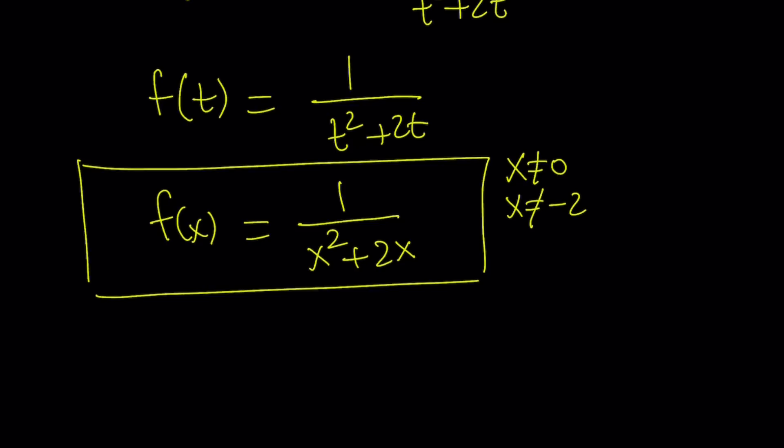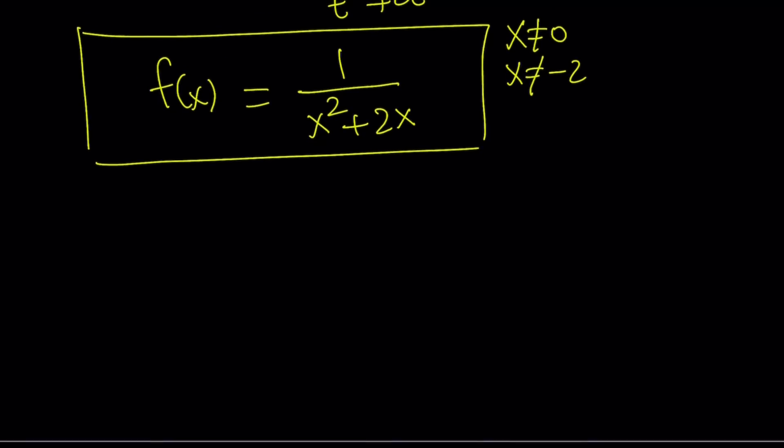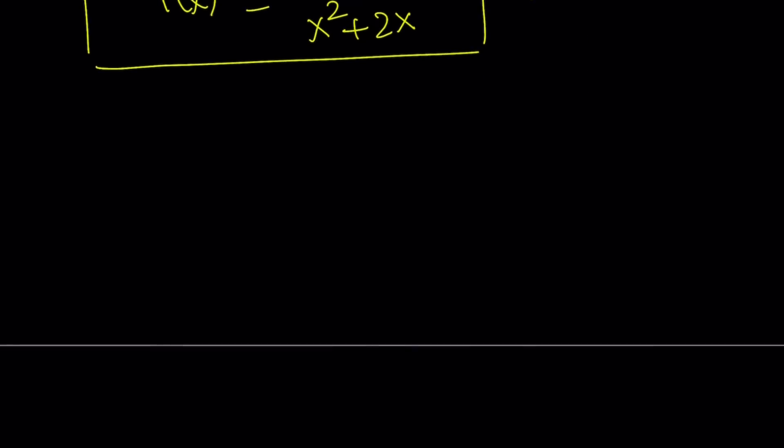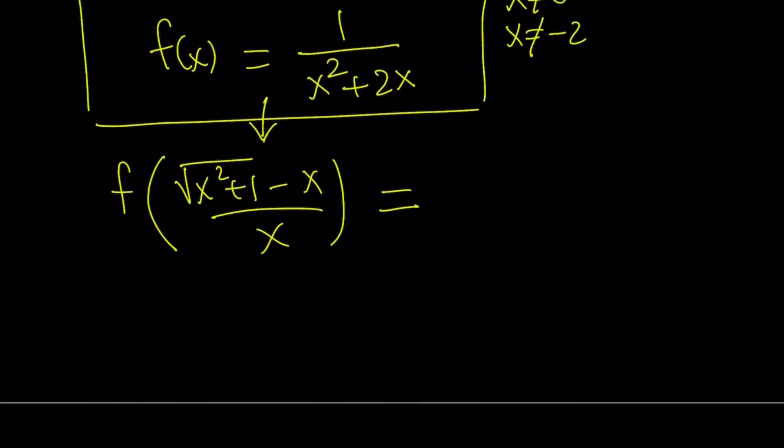Now we got this answer. What happens if you go back to the original expression and replace x with this expression? What is f of square root of x squared plus 1 minus x over x? So kind of working backwards with this. This would be a fairly easy problem, because if they gave you f of x and asked you to find f of square root of x squared plus 1 minus x over x, then you would just have to plug it in. In the first one, we had to solve for the value. So here it's just a matter of substitution. Let's do it.